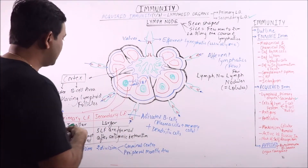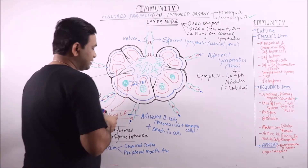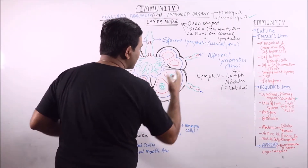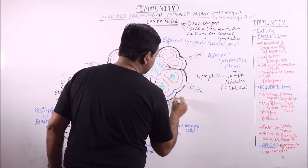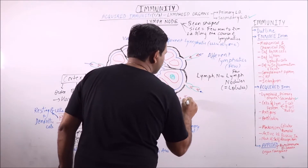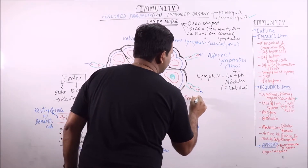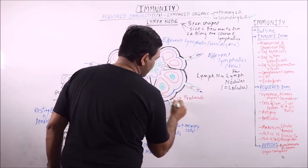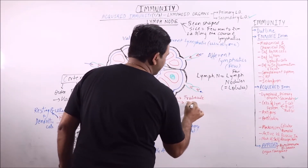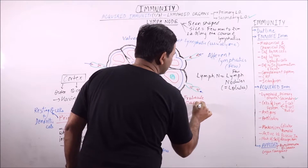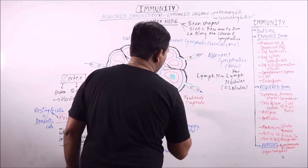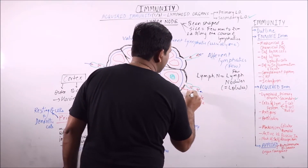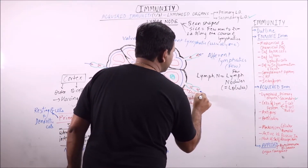The other regions visible include the trabeculae or partitions, the capsule, and the subcapsular space.